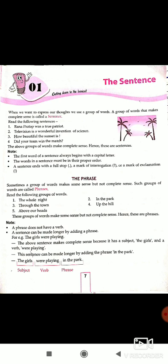Sometimes a group of words makes some sense but not complete sense — these are called phrases. Note: a phrase does not have a verb. A sentence can be made longer by adding a phrase. For example, read the following groups of words: 'the whole night,' 'in the park,' 'through the town,' 'up the hill,' 'above our head.' These make some sense but not complete sense, hence they are phrases.